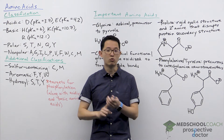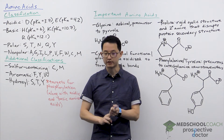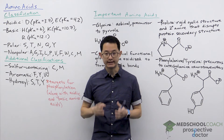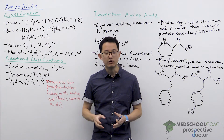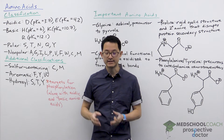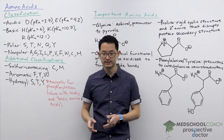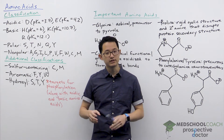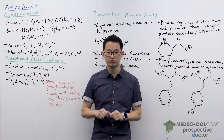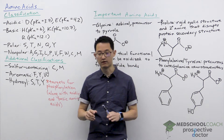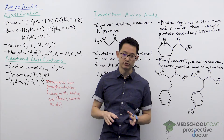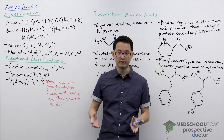You need to know the one-letter codes and the three-letter codes for all 20 amino acids. In addition, you also need to know the pKa's of the side chains of the acidic and basic amino acids. Finally, you also need to be able to recognize the structure of the side chains of all 20 amino acids. For this last part, I don't mean that you have to be able to draw the side chains from memory.